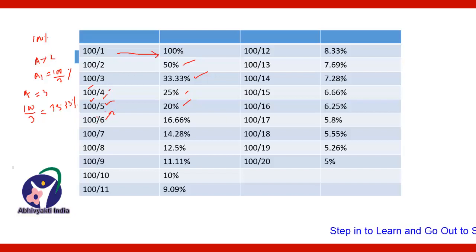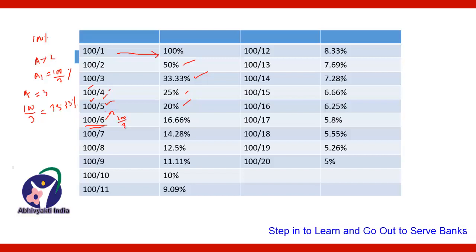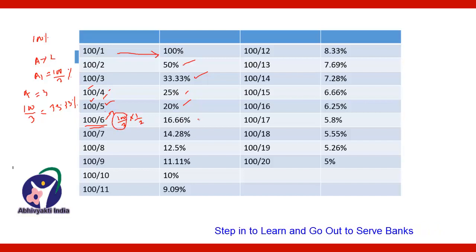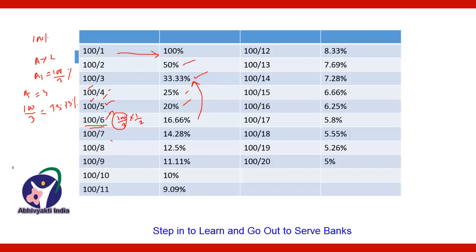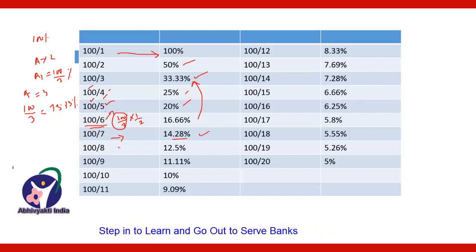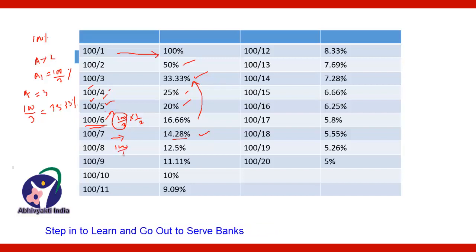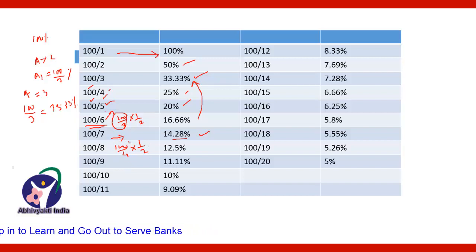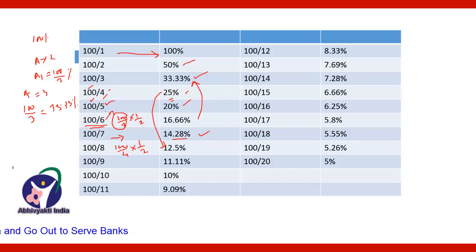Now if A finishes the work in 6 days, in one day he will finish 100 by 6. And 100 by 6 means 100 by 3 into 2, which is half of 100 by 3. So it will be 16.66% — half of 33.33%. Then 100 by 7 will be 14.28%. Then 100 by 8 can be written as half of 100 by 4, so half of 25, which is 12.50%.